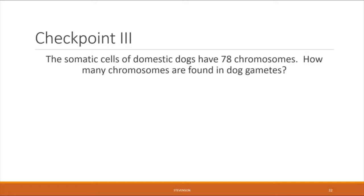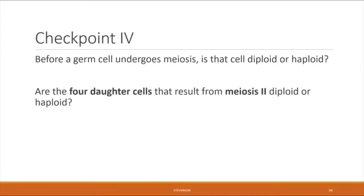Here's another checkpoint. The somatic cells of domestic dogs have 78 chromosomes — how many chromosomes would be found in dog gametes, dog sperm and eggs? Before a germline cell undergoes meiosis, is that cell diploid or haploid? And finally, are the four daughter cells that come out of meiosis two diploid or haploid?